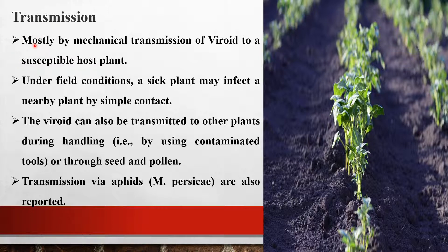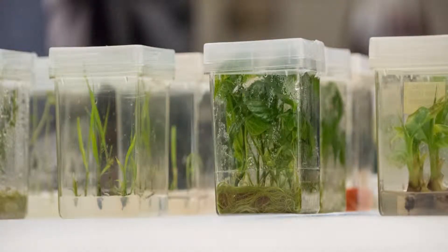Transmission is mostly by mechanical means. Under field conditions, a sick plant may infect a nearby plant by simple contact. Viroids can also be transmitted to other plants during handling using contaminated tools, or through seed and pollen transmission. Transmission via a vector is also reported.